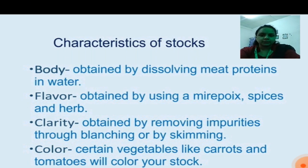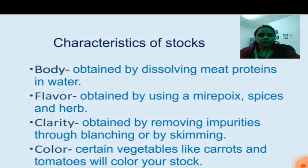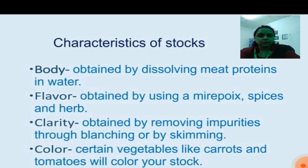It is clarity. The fourth characteristic is color. Certain vegetables like carrots and tomatoes will color your stock. Some red vegetables will also color your stock. These are some basic vegetables which affect the color of your stock.